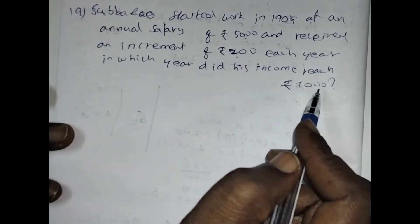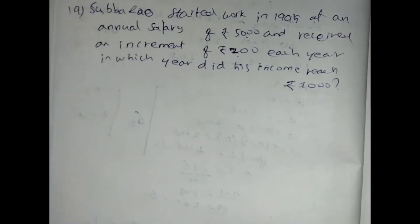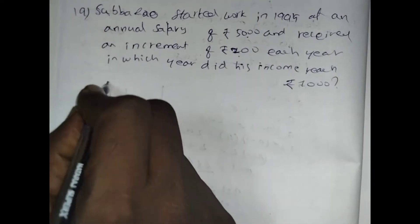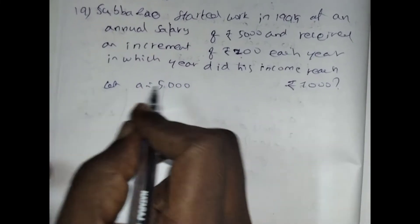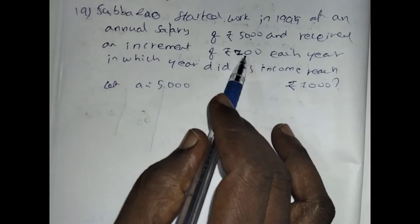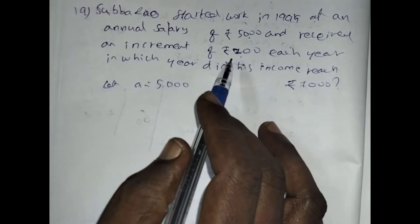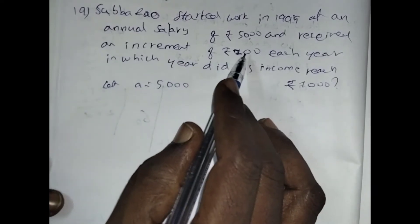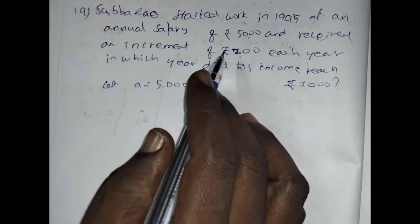When he goes and gets a 7000 salary. So from this story we can compare it with AP — Arithmetic Progress. Here we take 5000 as the first term, the first month salary as 5000, and every month it is increasing by 200 rupees — that is the D value. D can be increasing or sometimes decreasing, but here every year only 200 rupees is increasing.